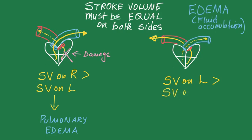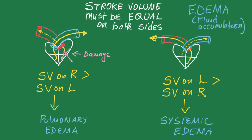If the stroke volume on the left side is greater than the stroke volume on the right, the result is fluid accumulation in the body, otherwise known as systemic edema. In this case, because the left is pumping more, the problem probably arose on the right side. So, there was probably damage on the right side of the heart.